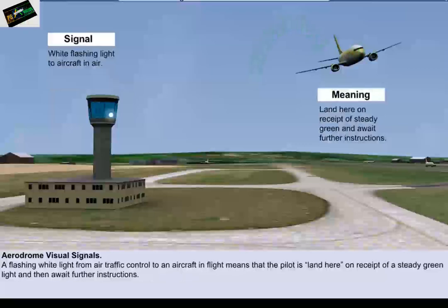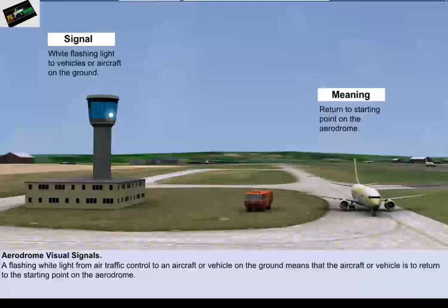A flashing white light from air traffic control to an aircraft in flight means that the pilot is to land here on receipt of a steady green light and then await further instructions. A flashing white light from air traffic control to an aircraft or vehicle on the ground means that the aircraft or vehicle is to return to the starting point on the aerodrome.